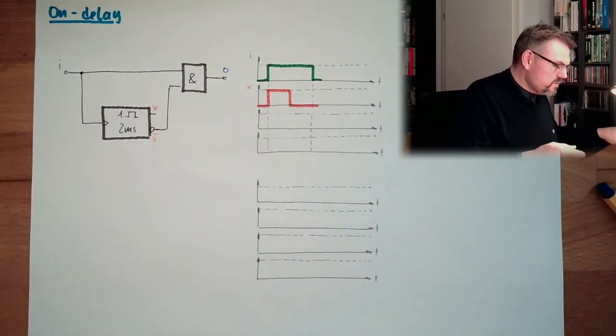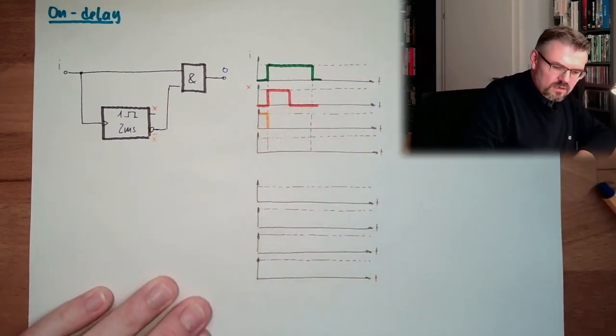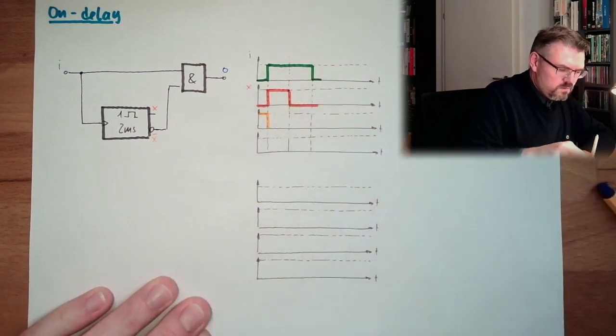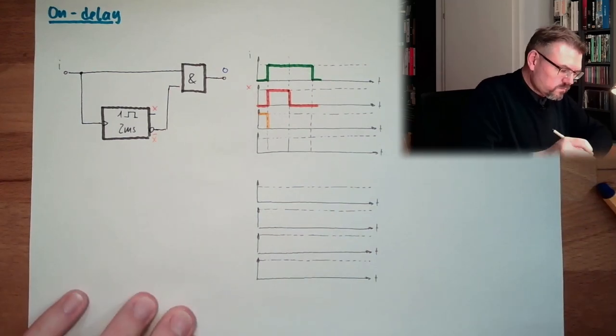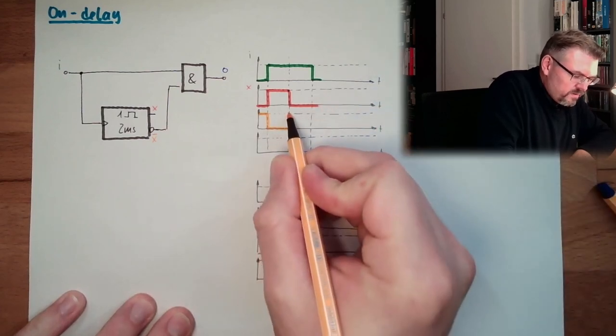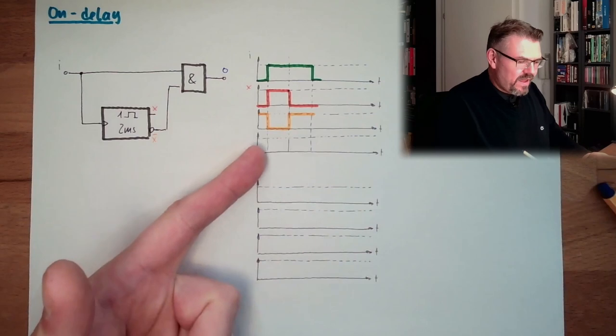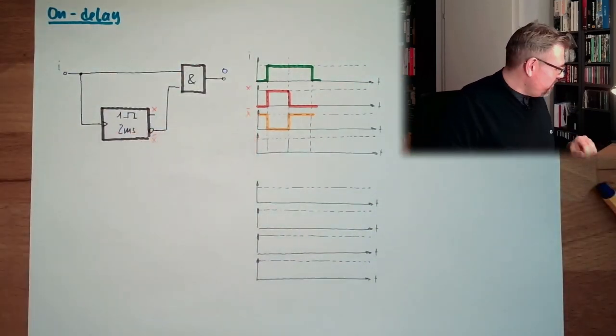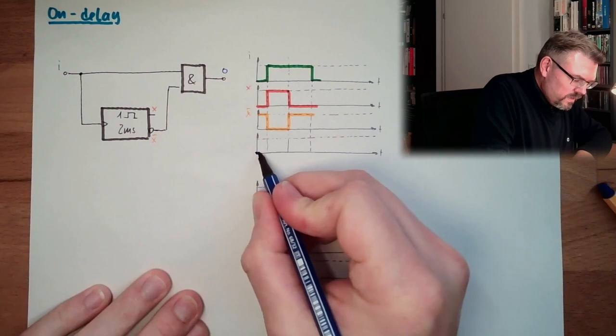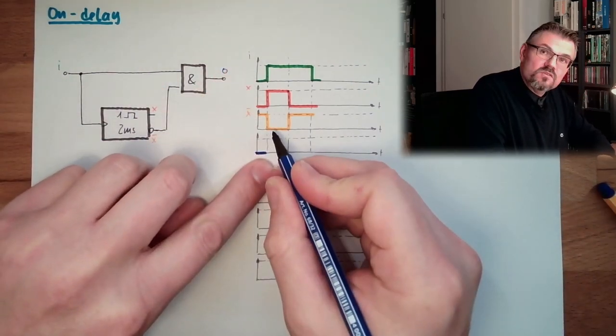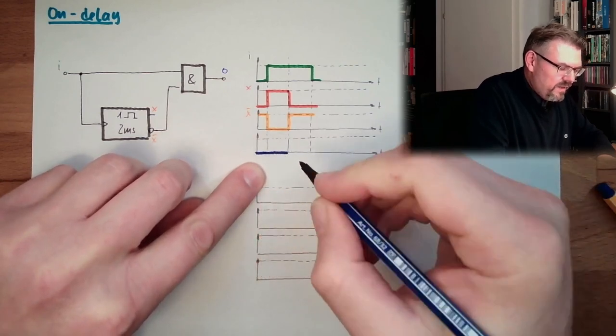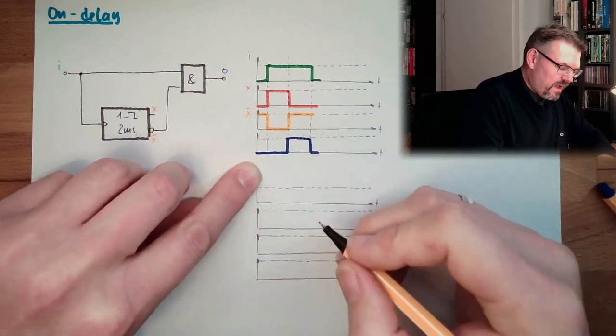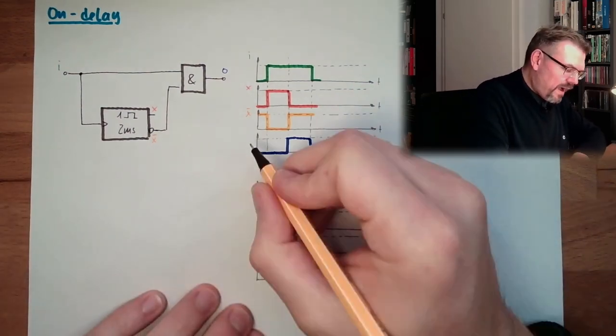And NOT X is of course doing exactly the opposite. So it would stay high, go low, change to high again. This is what NOT X is doing. And now this AND is combining I and NOT X. Here it's 0 because I is 0. Here it will stay 0 because NOT X is 0. And here both are 1, we are changing to 1, and when I is gone it will also be gone.